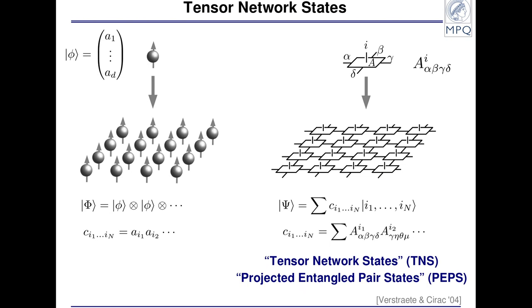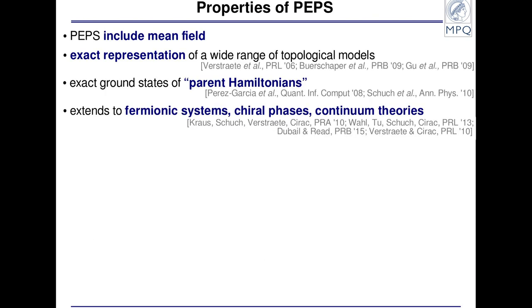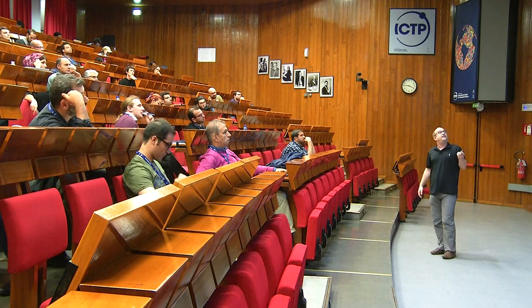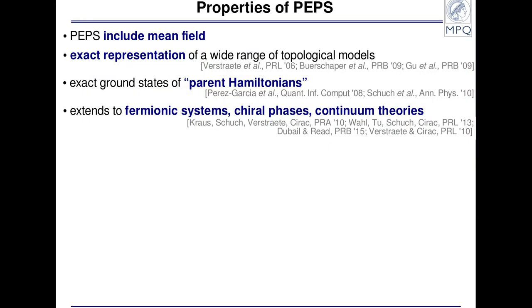The idea is that each tensor has a physical degree of freedom plus extra degrees of freedom to build up the entanglement. This is a very natural generalization of mean field. Remarkably, it's not a perturbative generalization — already at the lowest non-trivial level, where each auxiliary index has two possible settings, we can describe non-trivial topological models. In fact, we can describe all non-chiral topological models that way. We can also associate these to Hamiltonians and use them to build solvable models. We can generalize this to go beyond spin systems — to fermionic systems, systems with chiral order, continuous theories, and so forth.